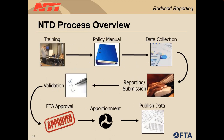This slide outlines the general flow of the NTD reporting process. All agencies begin with reporting training and familiarizing themselves with the NTD policy manual. Agencies then compile and collect their data once their fiscal year ends, enter it into the NTD system, and submit their first report. Your agency's assigned analysts will then review the data and send it back with revisions or requested clarifications. Once the report is finalized, it is sent to FTA for approval, used in the apportionment formula funding, and eventually published on the NTD website for general public use.